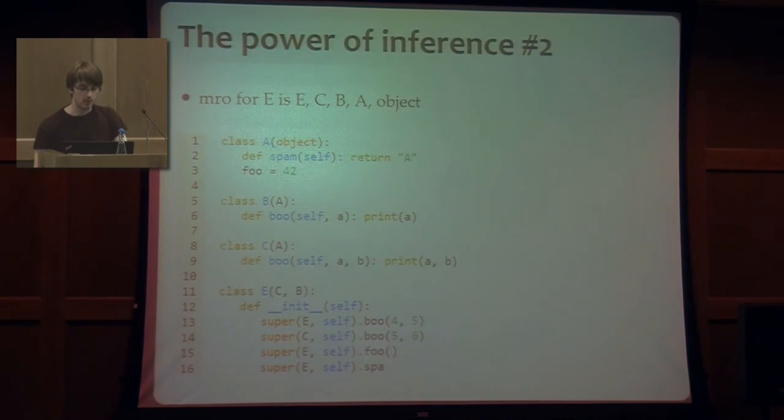Another example that shows how Astroid understands the method resolution order of your classes is this one, where I have a class E that inherits from both C and B. And the method resolution order for this class is going to be E, C, B, A, and object. And this code has three errors in it. First, there's no spa attribute anywhere in the method resolution order. There's only spam. So at line 16, there's going to be an error. Also at line 15, there's going to be an error with foo because foo is an integer and foo will not be called.